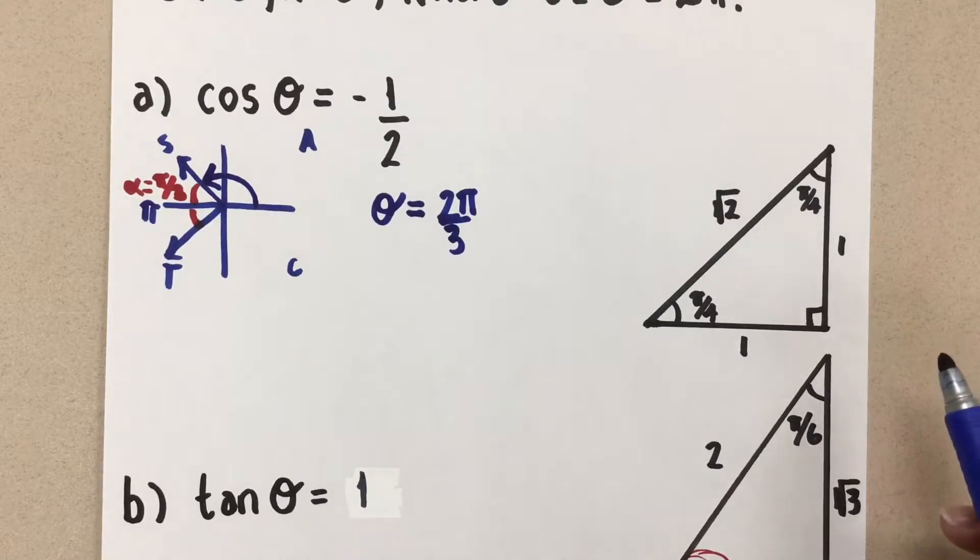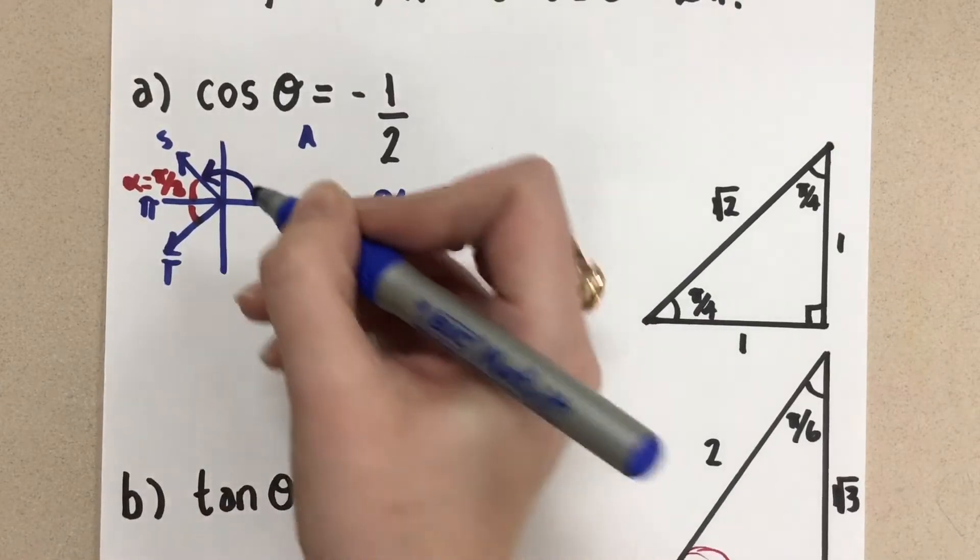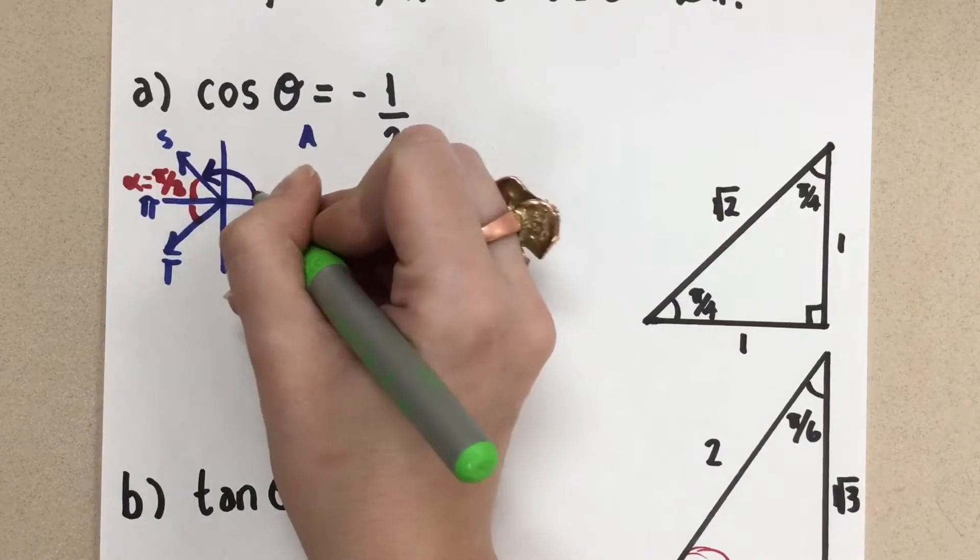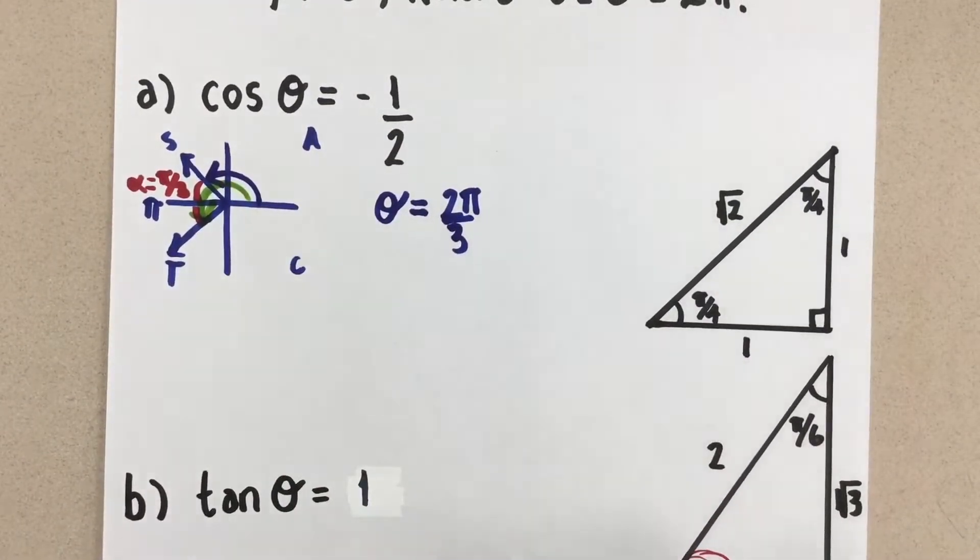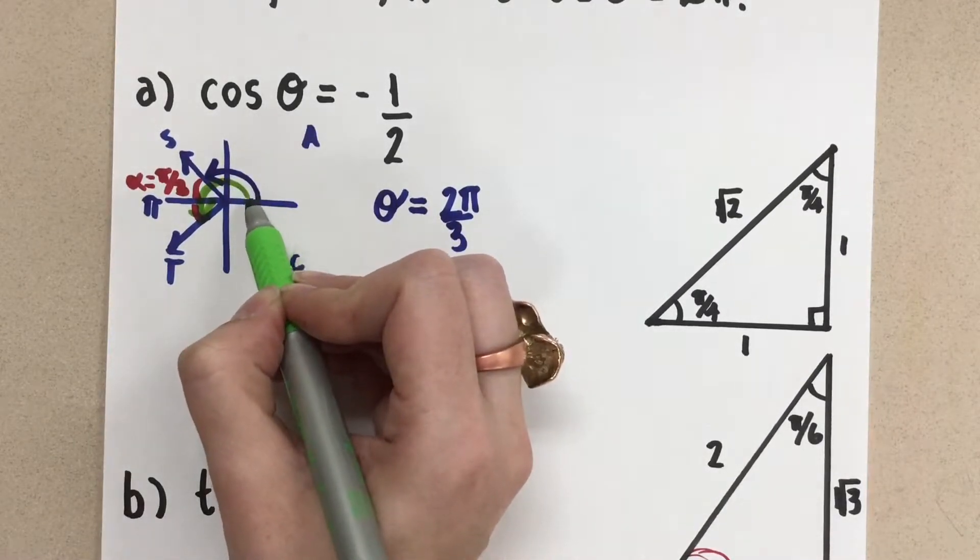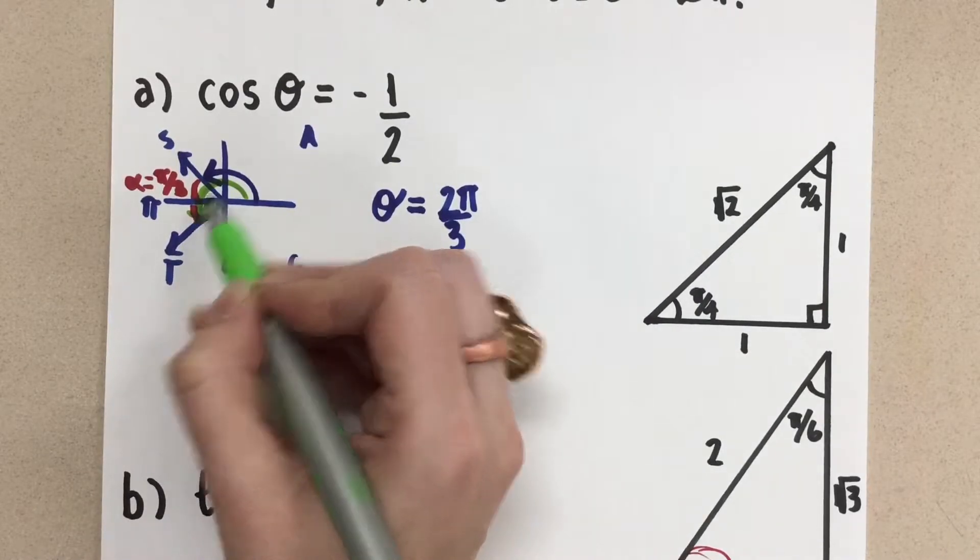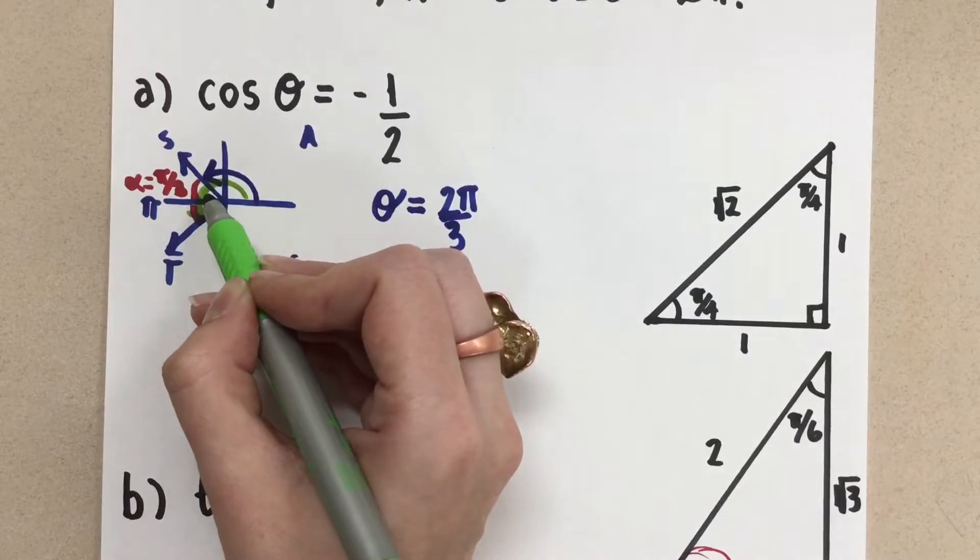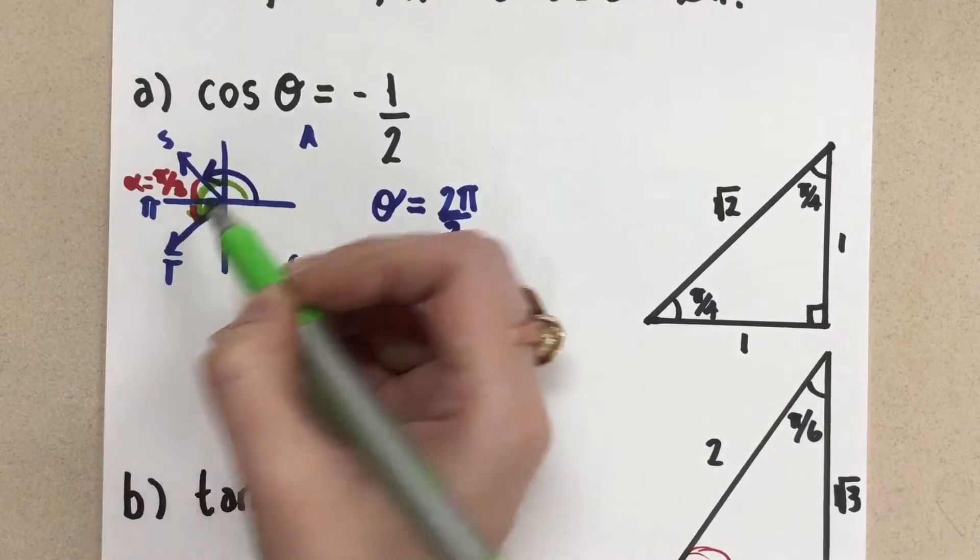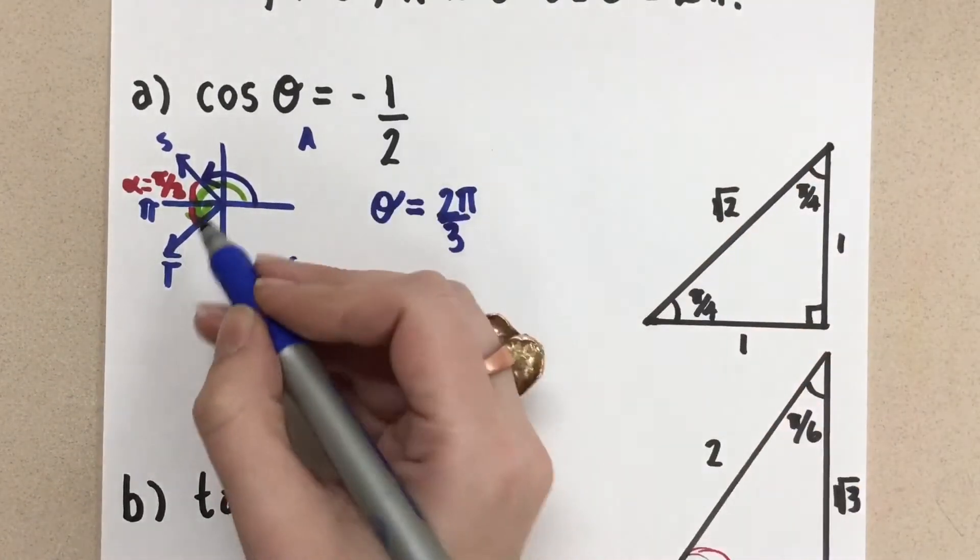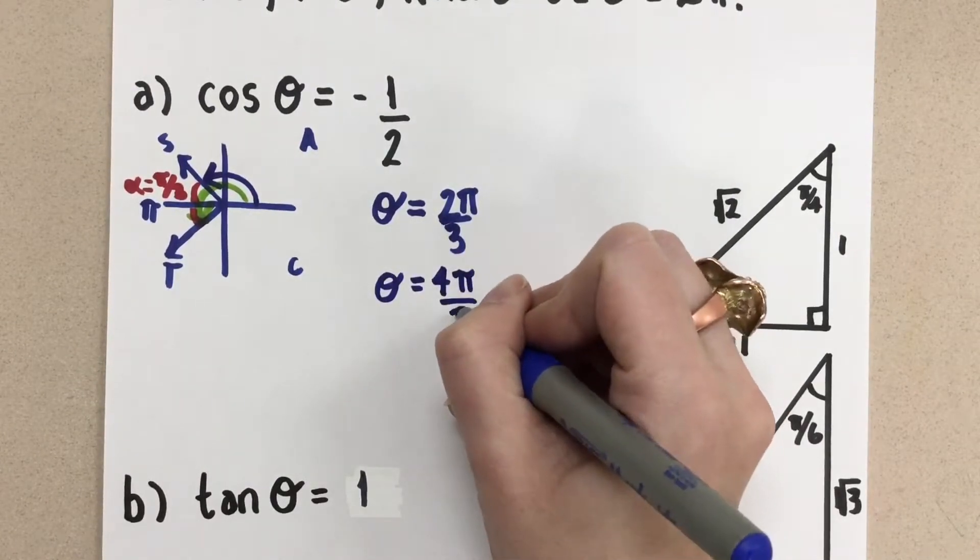Okay, so now we need to find the angle that will go to this terminal arm. So I'm looking for, let's get a different color, this angle right here that goes around. So this will be one whole π plus one-third of π. So one π is three-thirds, and then one-third, three-thirds plus one-third is four-thirds. So this angle right here is 4π over 3.